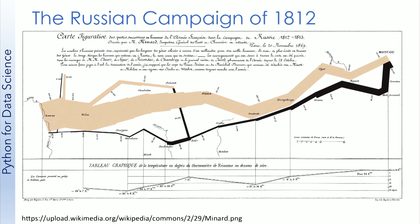Charles Joseph Minard created this figure in 1869. The title of the figure is, when translated to English, 'Figurative Map of the Successive Losses in Men of the French Army in the Russian Campaign 1812 through 1813.' Minard was a successful civil engineer in France who was considered an early leader in using visualizations in engineering and statistics. He is most well known for creating this figure which charted that Russian campaign.